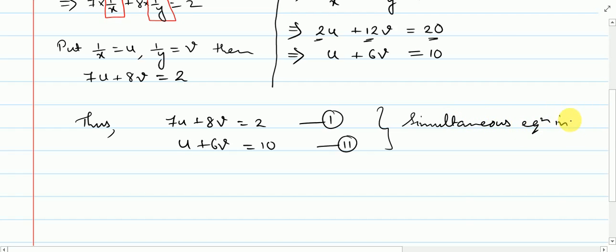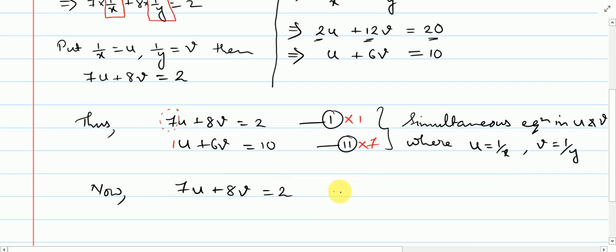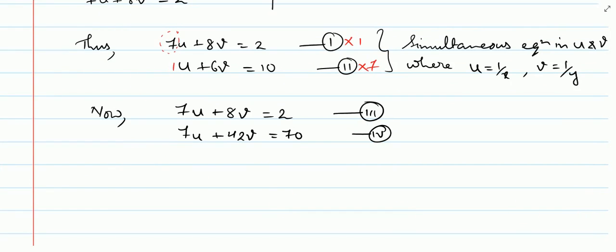Now we have a simultaneous equation in u and v, where u = 1/x and v = 1/y. To eliminate u, look at the coefficients: u has coefficient 7 in Equation 1 and 1 in Equation 2. Multiply Equation 1 by 1 to get 7u + 8v = 2 as Equation 3, and multiply Equation 2 by 7 to get 7u + 42v = 70 as Equation 4.